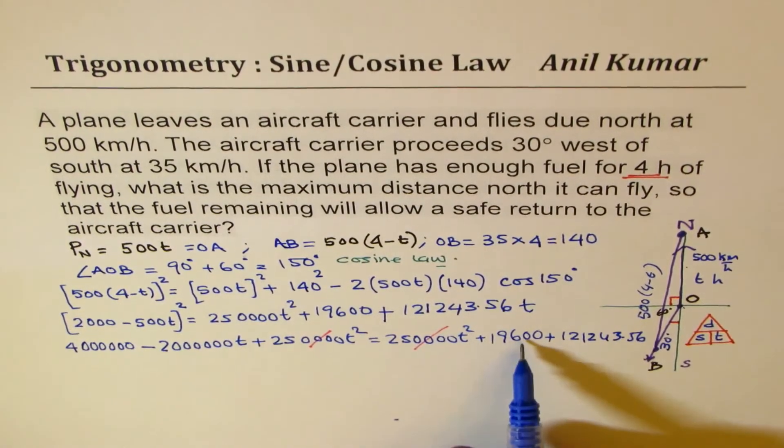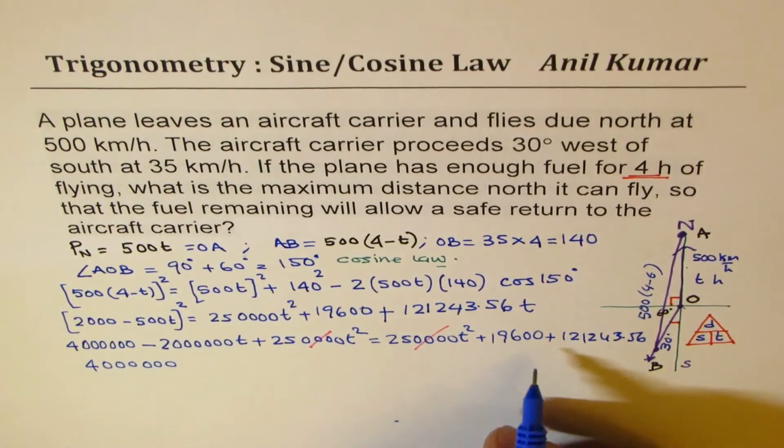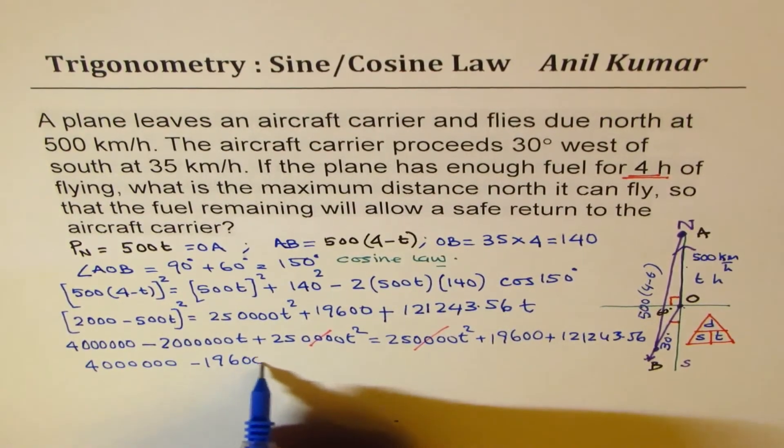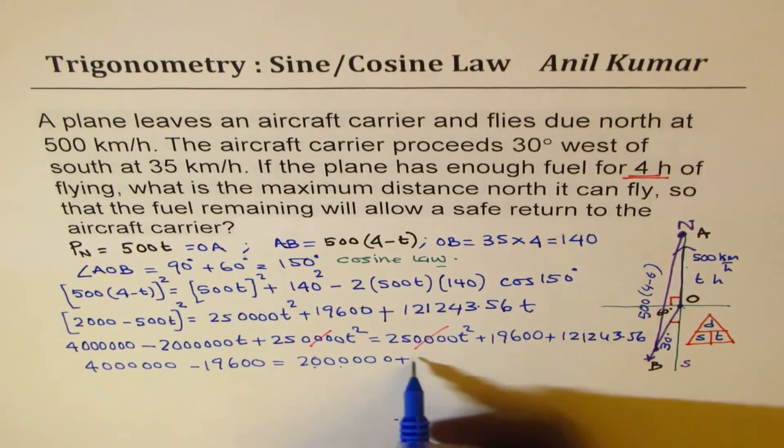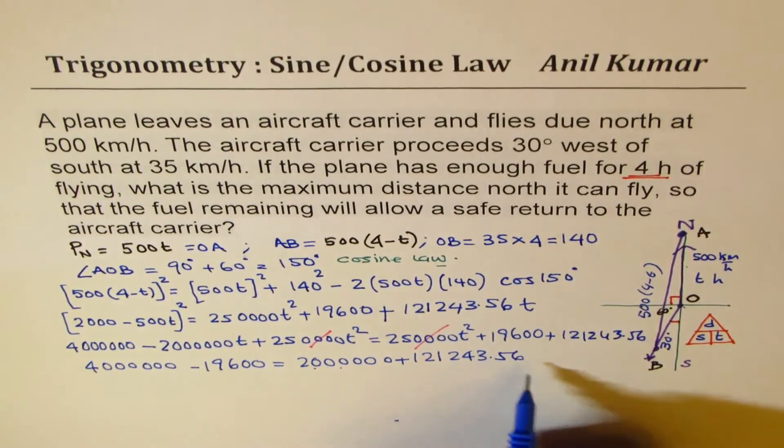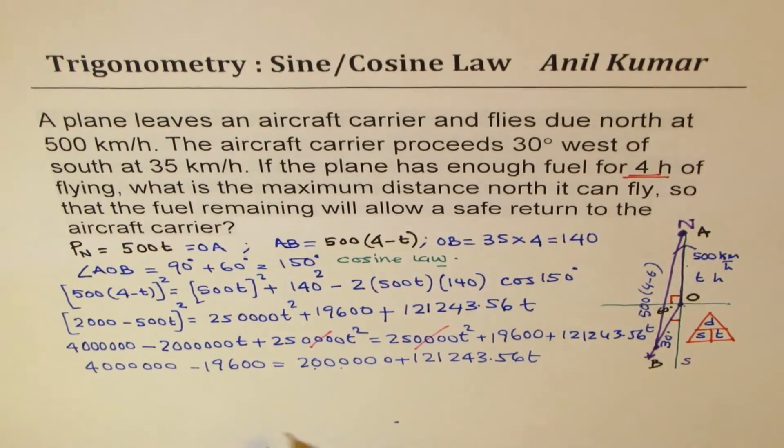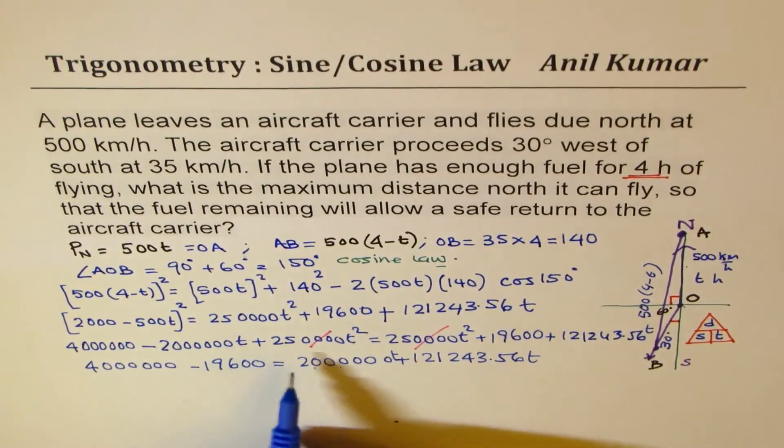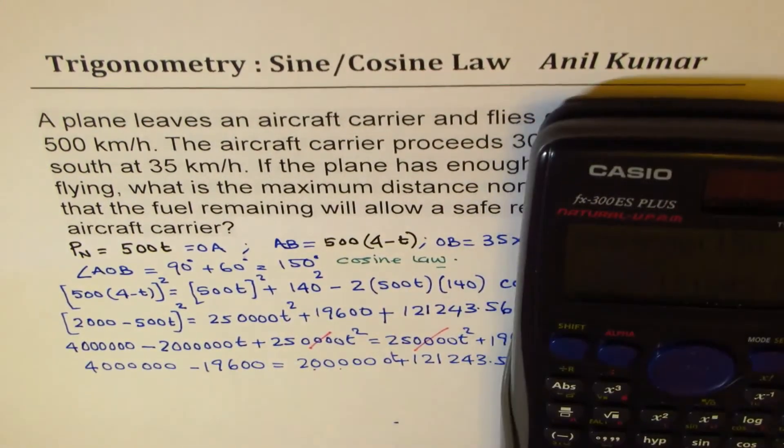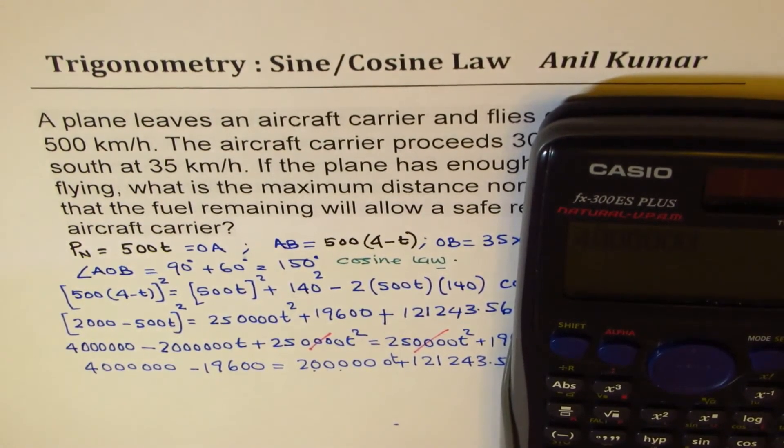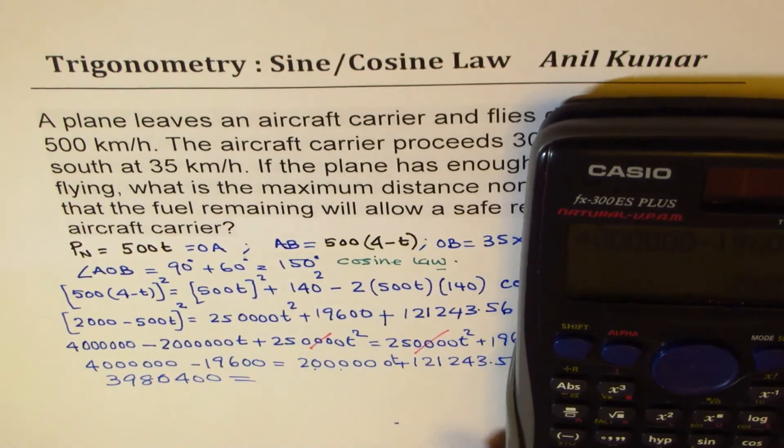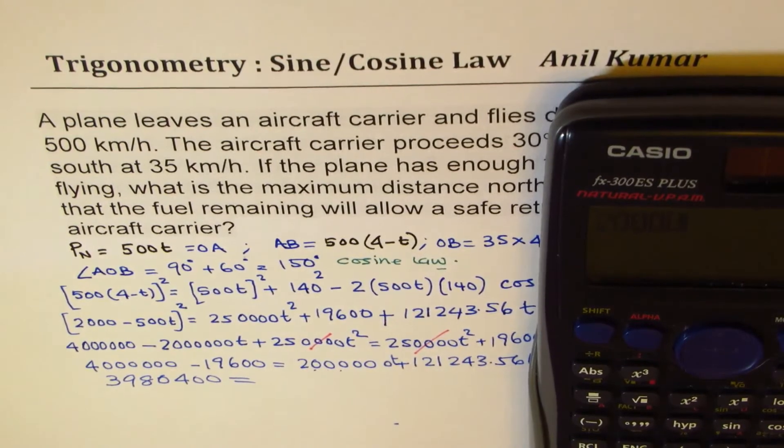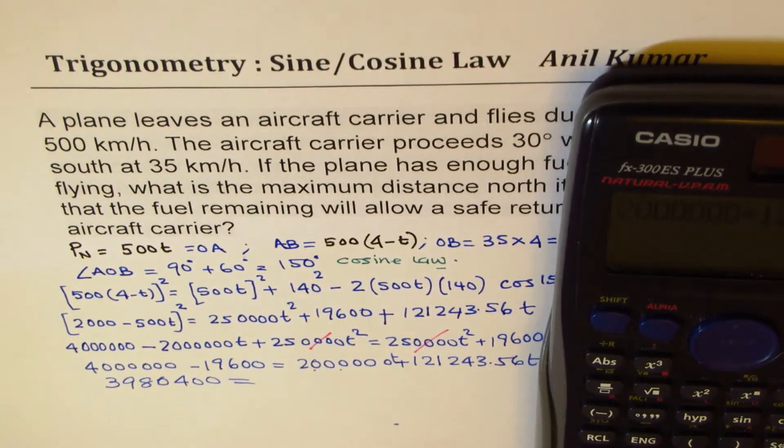So let's bring the constants together. So we have 4 million minus 19,600 equals to 2 million plus 121,243.56T. This is with T. So these are the terms with time. So let's do that difference. 4,000,000 take away 19,600 equals to 3,980,400 equals to, let's add those two, 2,000,000 plus 121,243.